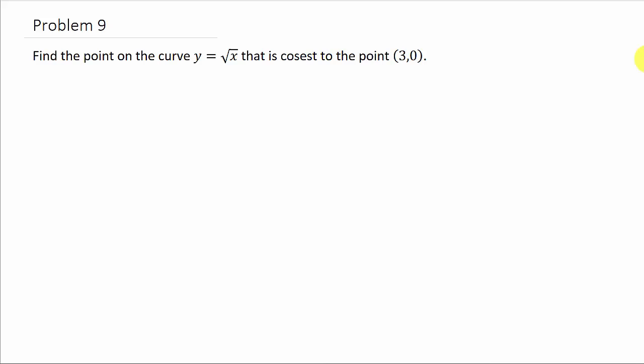Alright, so it says find the point on the curve y equals square root of x that is closest to the point (3,0). So we want to minimize the distance from this point to a point on this curve. Well, let's draw a picture of it.